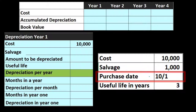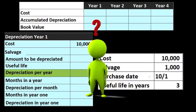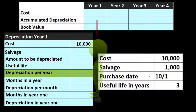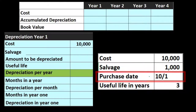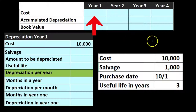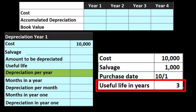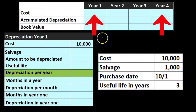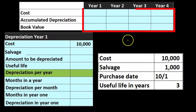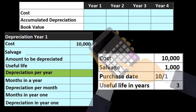First, we're going to figure out depreciation for an entire year, and then deal with the fact that we bought it in the middle of the year. How we'll handle that is by having part of the depreciation in year one and part in the final year. Therefore, the three-year property is really going to run through four years: half of year one, half of year four, and full years two and three.